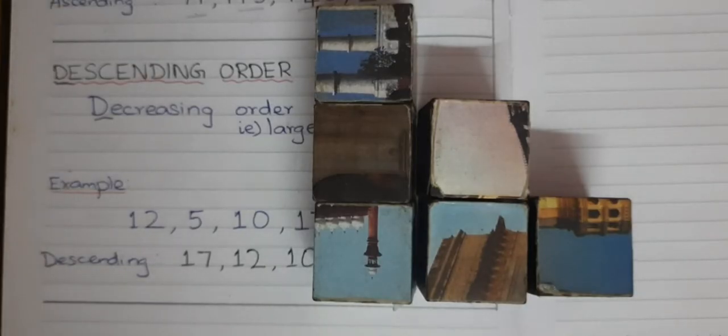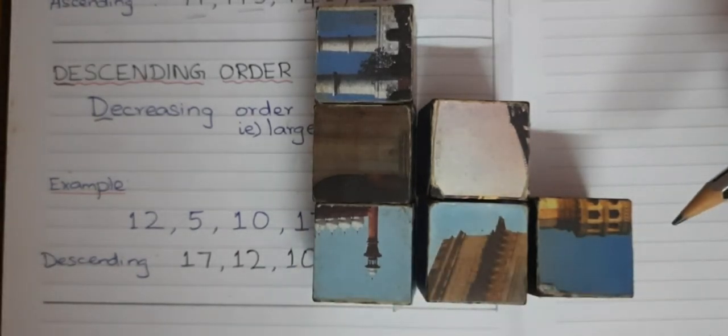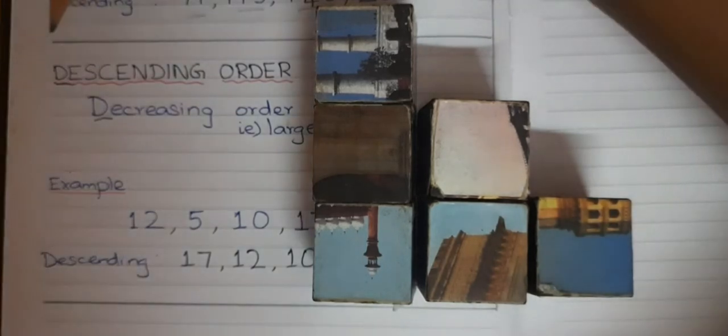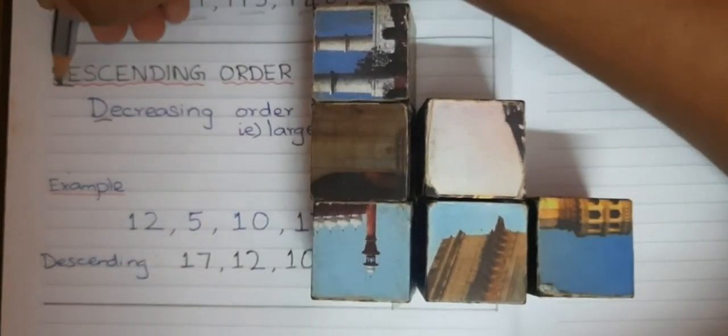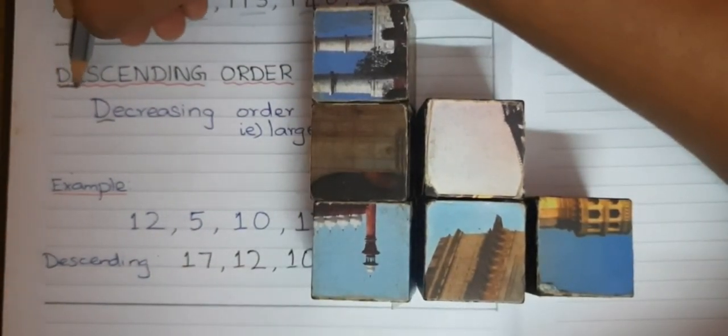Good morning students. Today we are going to see descending order. Descending order means it is from largest to smallest. See, for easy way, let me say one thing. In the descending order also, you are having, what is the first word?